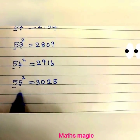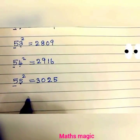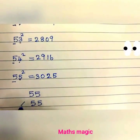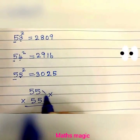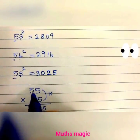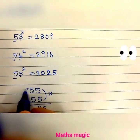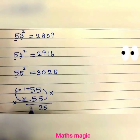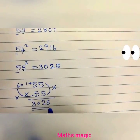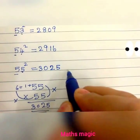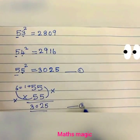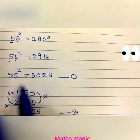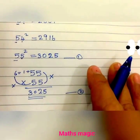Here is another method for 55 squared. 5 times 5 is 25. Now add 1 to 5 to get 6, then multiply 6 and 5: 6 times 5 is 30. So 3025. This is the second method. Note that only two-digit numbers ending in 5 can be done using this second method.